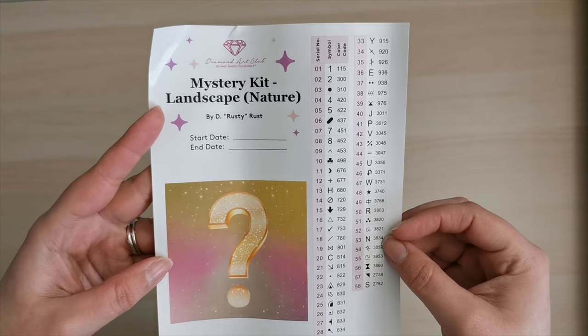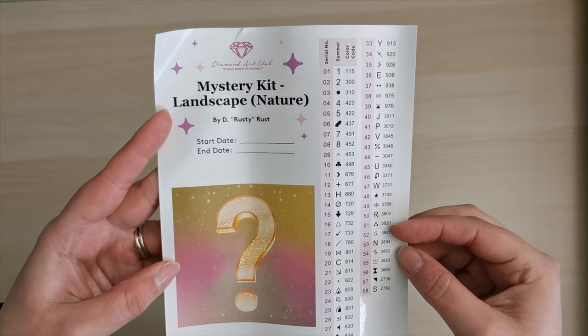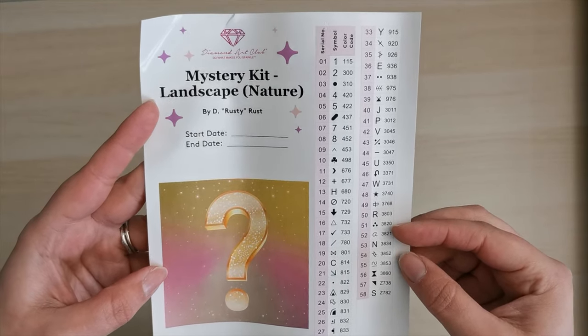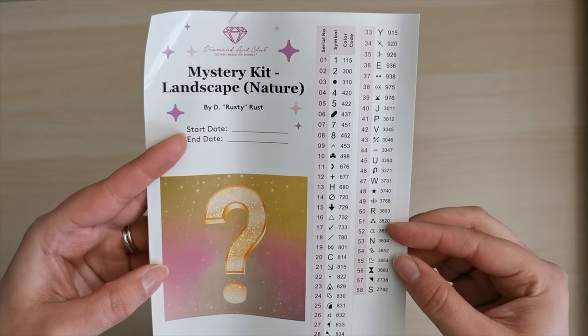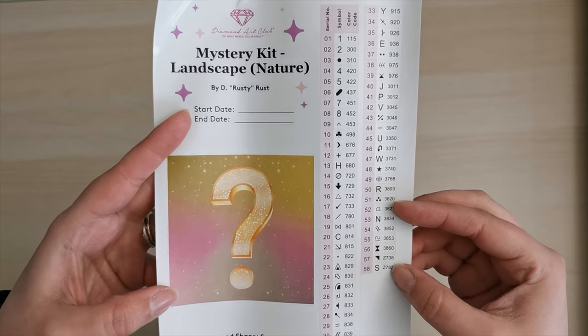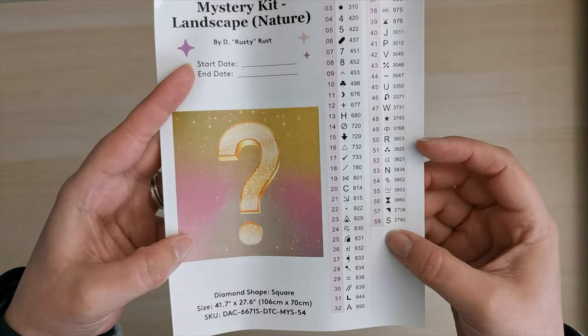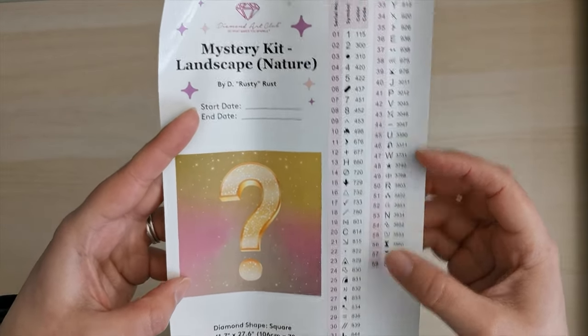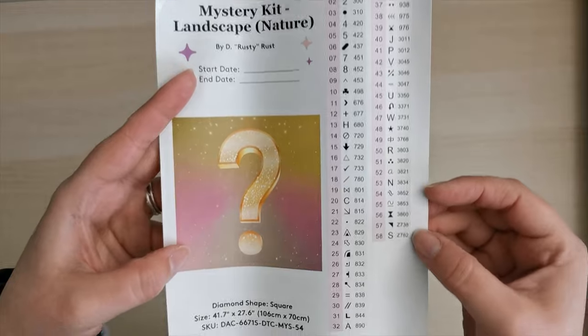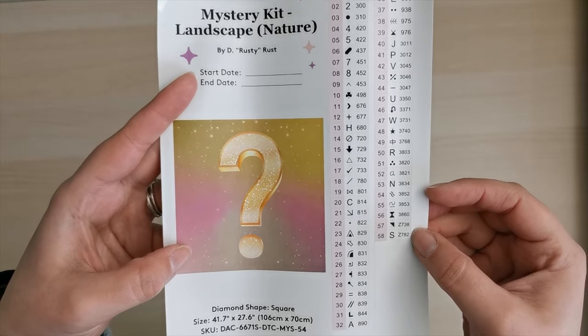With these mystery kits you'll notice that there are no background colors here like usual and that's to keep that element of surprise. So this I consider to be an advanced diamond painting. It's a little bit more tricky to do. I can see from this list of colors here that there are 58 colors in total. There's one AB diamond and there's two fairy dust diamonds in this.